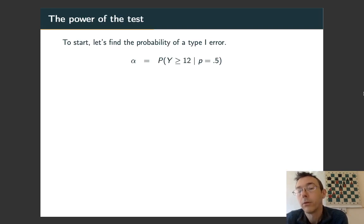As we're doing the power function of a test, let's start with a special case. Let's start with the probability of a type I error. This is alpha. So here we're talking about assuming the null hypothesis is true, p = 0.5, and then computing the probability of rejecting the null hypothesis, Y ≥ 12.